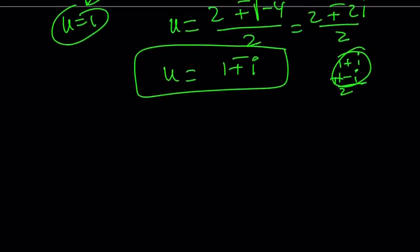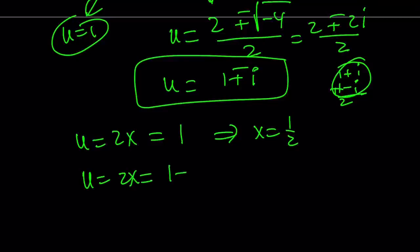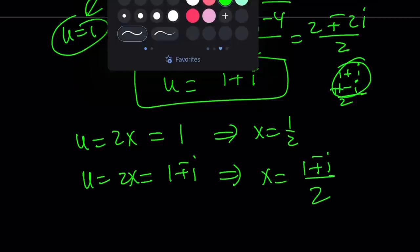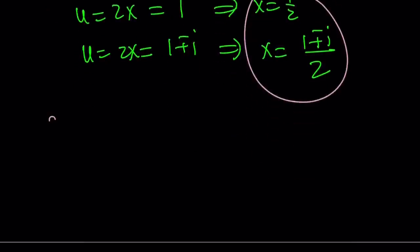So u is equal to 2x, and if it equals 1, then from here x equals 1 half. And if u is equal to 2x, and that is equal to 1 plus minus i, then from here x equals 1 plus minus i divided by 2. Actually, those are going to be the solutions, and this brings us to the end of the first method and the beginning of the second method.